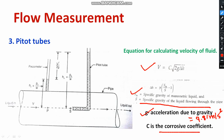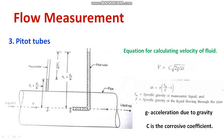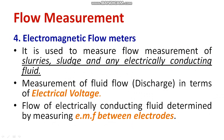So, this is how the pitot tube operates: kinetic energy is converted into pressure energy, you calculate the velocity of fluid flow, then you can calculate the pressure and the discharge. This is what is called the pitot tube.